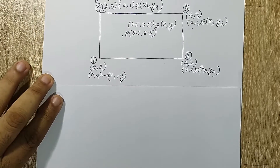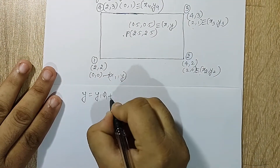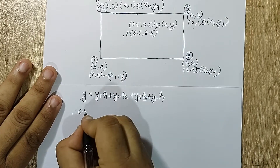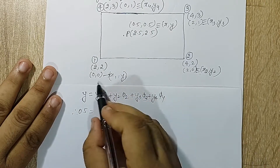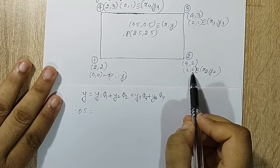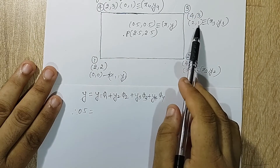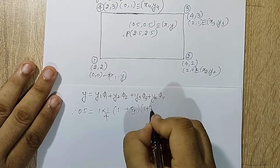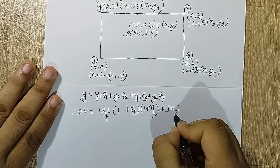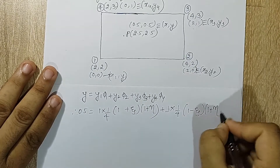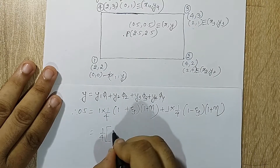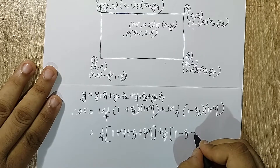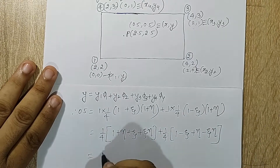Now I will find the value of eta. I use the equation for y: y = y1·φ1 + y2·φ2 + y3·φ3 + y4·φ4. y is 0.5. y1 is 0, so the first term vanishes. y2 is also 0, so the second term also gets cancelled. The third term has y3 = 1, so I write 1·(1/4)(1+ζ)(1+η). For the last term y4 = 1, so 1·(1/4)(1−ζ)(1+η). Expanding: 0.5 = (1/4)(1 + η + ζ + ηζ) + (1/4)(1 − ζ + η − ηζ).